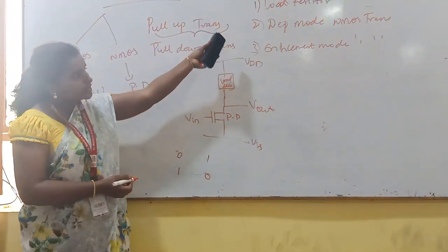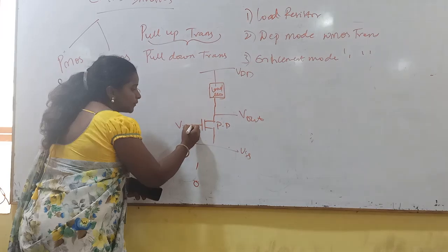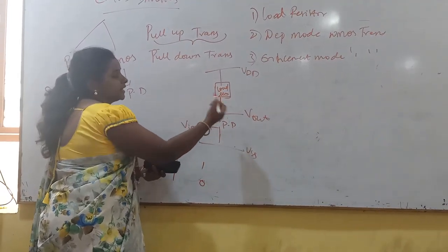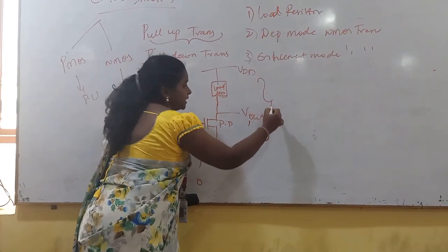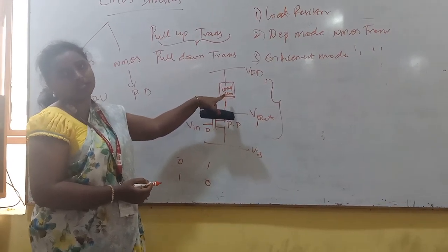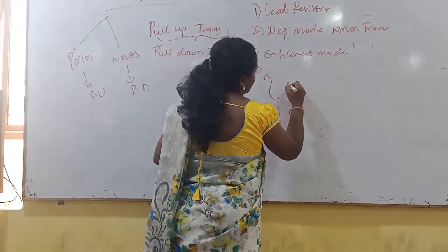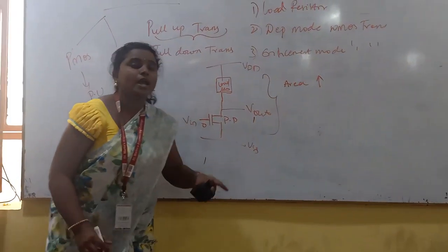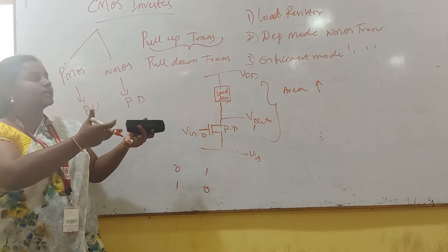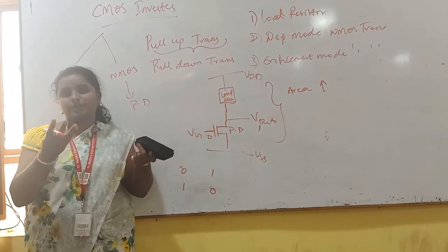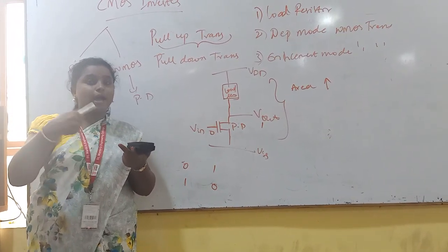All three different various pull-up arrangements have the same inversion operation and the same inverter output. But for all three types, we will be having some disadvantages. For this first one with the load resistor pull-up, when we apply the input and get logic 1 at the output, here the pull-up transistor is the load resistor, so placing those resistors will be occupying more area. More area is one of the parameters in VLSI design, which has 4 different parameters: power consumption, area, high speed, and testing time.